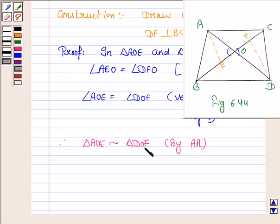Now, since the two triangles are similar, therefore the corresponding sides are in the same ratio. So, this implies AE upon DF is equal to AO upon OD. Let's name this as equation 1.